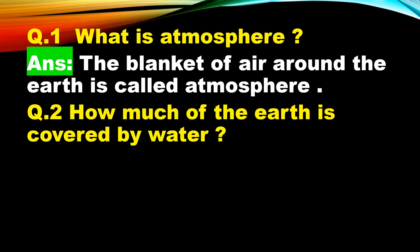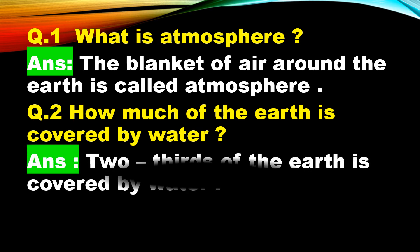The next question is: how much of the earth is covered by water? Two-thirds of the earth is covered by water. Like, if the earth has three parts, two parts are water. So two-thirds of the earth is covered by water.